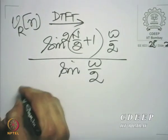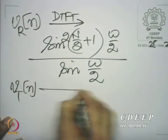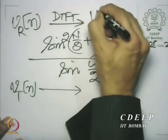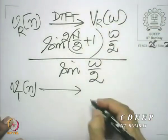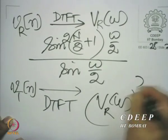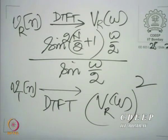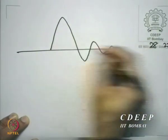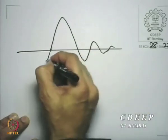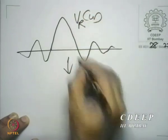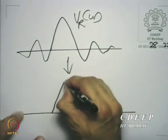The triangular window is therefore going to have the DTFT squared. Let us call this V_R(ω). So v_t(n) is going to have the DTFT V_R(ω) squared, and we can sketch that. V_R(ω) had an appearance we saw last time, and V_T(ω) is going to have an appearance that is its square.